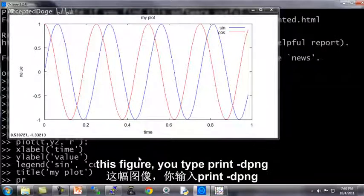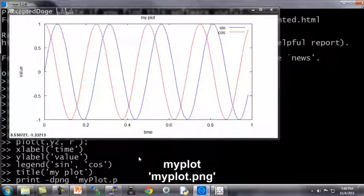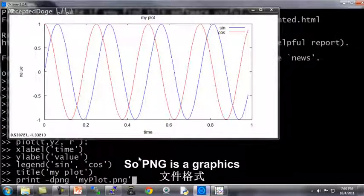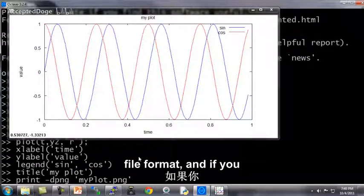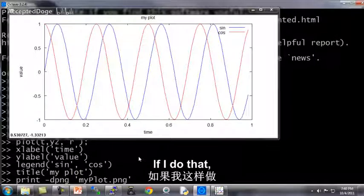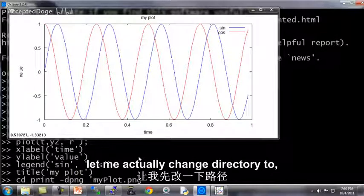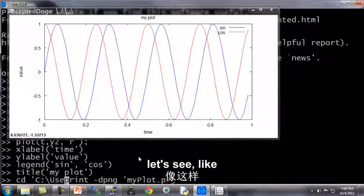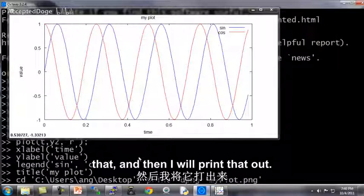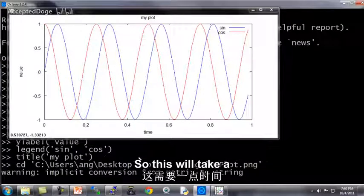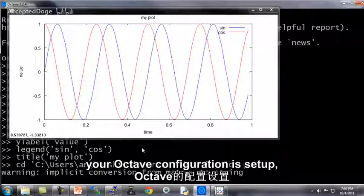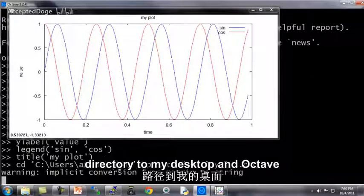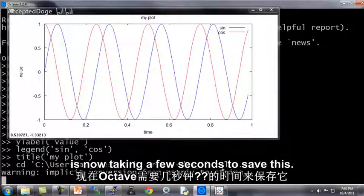Lastly, if you want to save this figure, you type print d-dpng my plot.png. So png is a graphics file format. And if you do this, this will actually save this as a file. If I do that, let me actually change the directory to, let's see, like that. And then I will print that out. So this will take a while. Depending on how your Octave configuration is set up, this may take a few seconds. But change the directory to my desktop. And Octave is now taking a few seconds to save this.